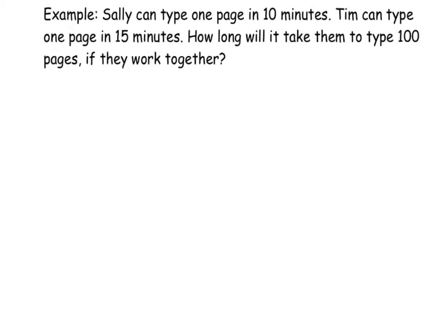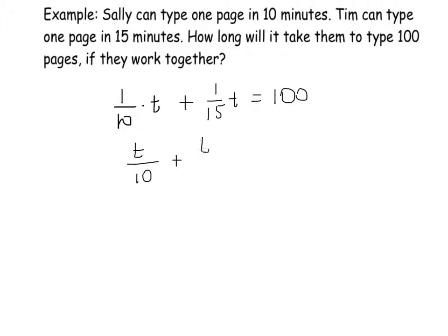The first example says that Sally can type 1 page in 10 minutes and Tim can type 1 page in 15 minutes. How long will it take them to type 100 pages if they work together? To set up the equation, Sally works 1 tenth of the time and Tim works 1 fifteenth of the time, and together they will make 100 pages. So t over 10 plus t over 15 equals 100.